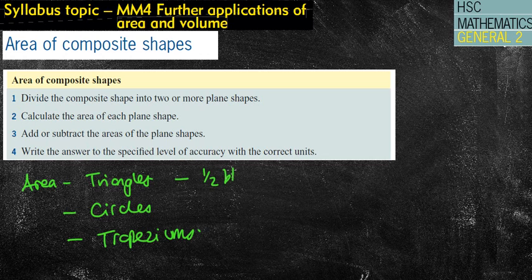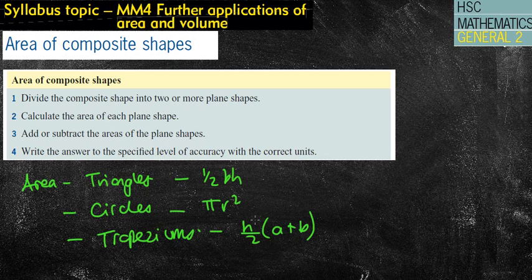Triangles, remember, is half base times height. Circles we did last lesson, which is pi r squared. Trapeziums is h over 2, a plus b, or some form of that. And obviously there can be other formulas that are on your sheet.